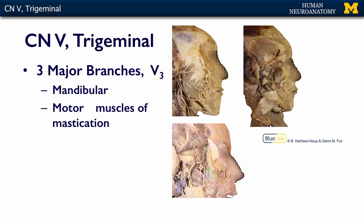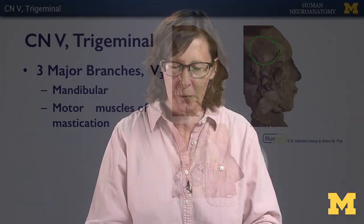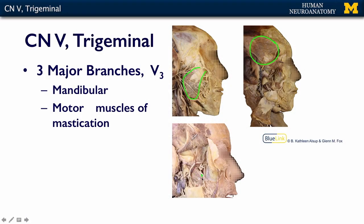The muscles of mastication were covered in the musculoskeletal MOOC, but I want to point them out to you. Here is your masseter — the very large muscle that you can feel when you clench your jaw. Another important muscle of mastication is your temporalis muscle. If you put your fingers on the side of your head and bite down really hard, you can feel that muscle clenching. The others are deep to the mandible — you can see the medial and lateral pterygoid muscles. Those are the muscles innervated by the mandibular branch of five and are the muscles of mastication.